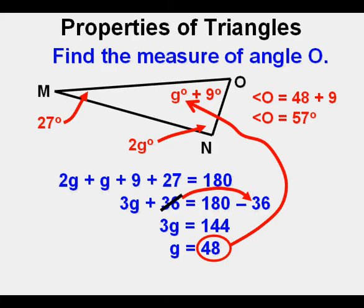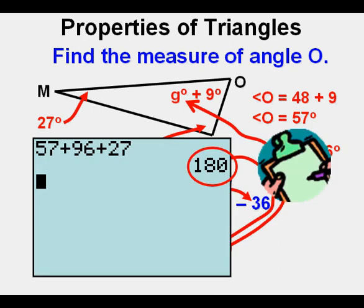We always have to look at what is being asked. We check our answer by also substituting 48 in the other angle as well. 2 times 48 is 96, so angle N is 96. We add the three angles together and get 180 degrees, so it checks out.